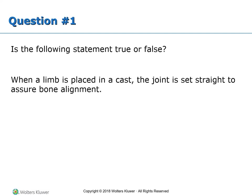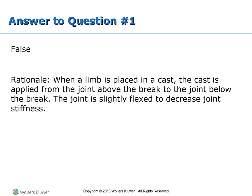Question number one: Is the following statement true or false? When a limb is placed in a cast, the joint is set straight to assure bone alignment. The answer is false. When a limb is placed in a cast, the cast is applied from the joint above the break to the joint below the break. The joint is slightly flexed to decrease joint stiffness.